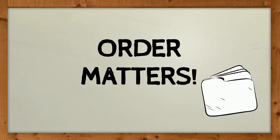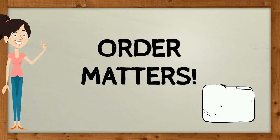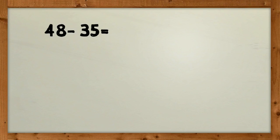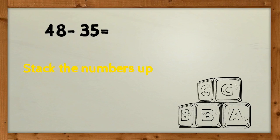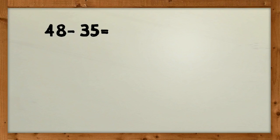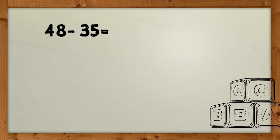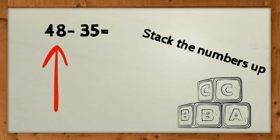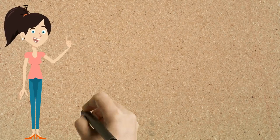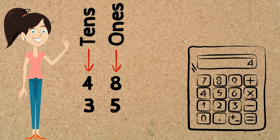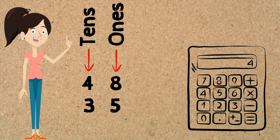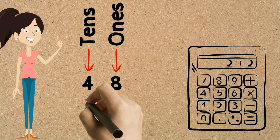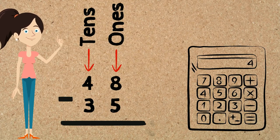With subtraction of multi-digit numbers, it's very important to always remember that order matters. The first thing we need to do is stack the numbers up — the first number, which is the number you are taking from, is always the bigger number and goes on top, and the number you are taking away goes at the bottom. Make sure ones places are in one column, tens places in one column, and then draw a straight line beneath them with a minus sign on the left-hand side.